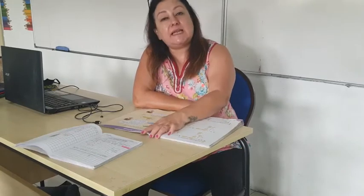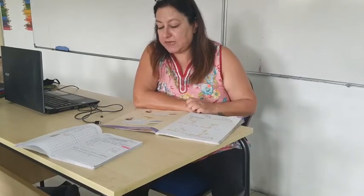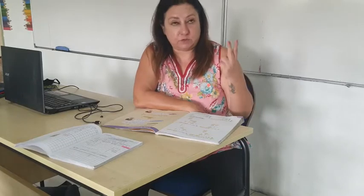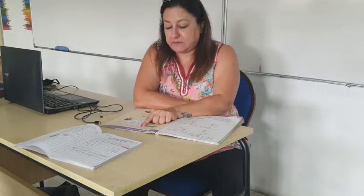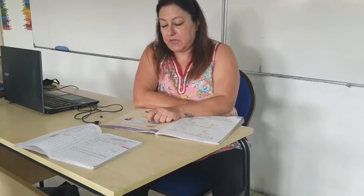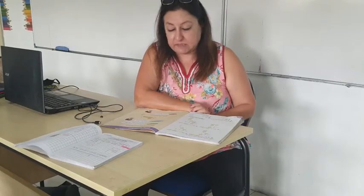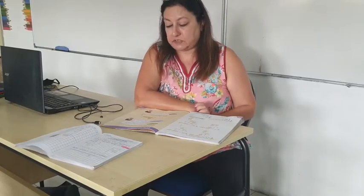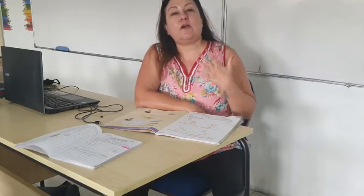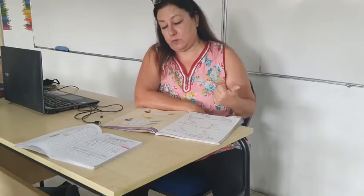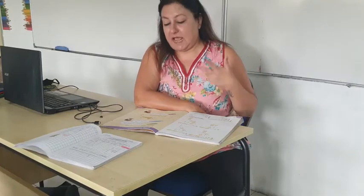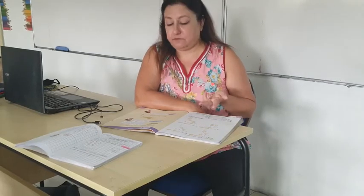So the first part is understanding the problem. What were Bala and David doing? There are two people — what were they doing? Before that, can you highlight 'three times as many'? Please highlight 'three times as many'. So what were Bala and David doing? How many pictures did Bala take? And who took more pictures, Bala or David? What do I have to find? These are all the things you have to understand first — what were they doing, who took more pictures, and what do we have to find out?